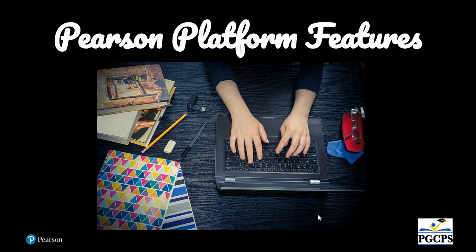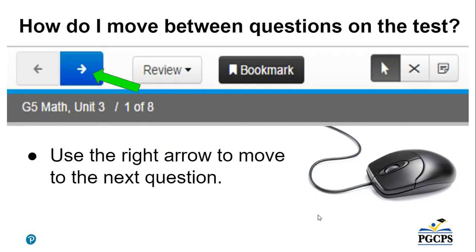Now we're going to get into some of the Pearson platform features. How do I move between questions on the test? Use the right arrow to move to the next question. Looking at where the highlighted green arrow is pointing, this is the arrow you will use to move forward through the test. The arrow on the left is what you will click on should you want to go backward.